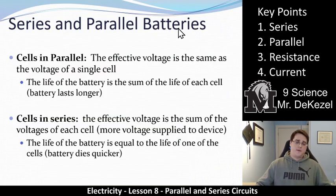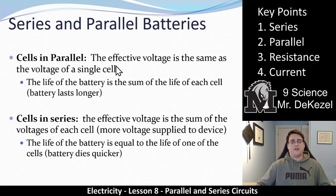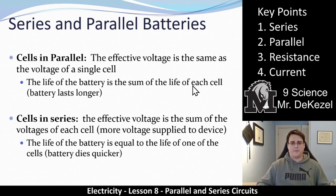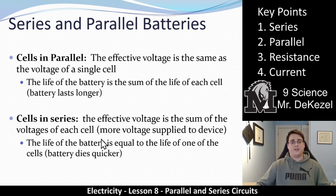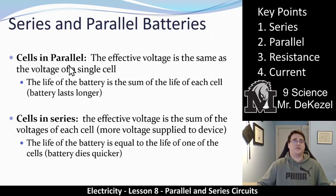When we have batteries or cells — remember, batteries and cells are the same thing — they can also be in parallel or in series. If cells are in parallel, the effective voltage is the same as the voltage of a single cell; it's kind of just like a backup, and the life of the battery is the sum of the life of each cell, so the batteries last longer. If you have them in series, the effective voltage is the sum of all the voltages, but the battery life equals that of just one battery — it dies quicker, but you have more voltage, more current, which makes a light bulb brighter rather than lasting longer as it would in parallel.